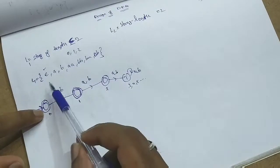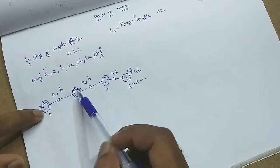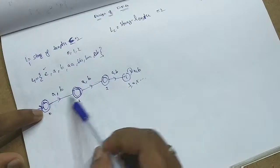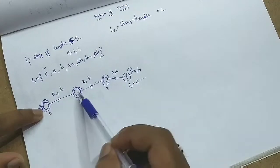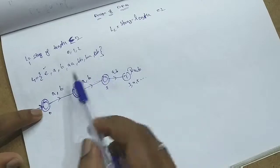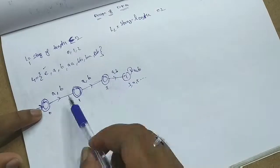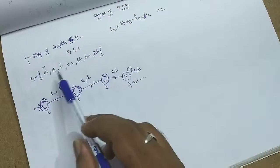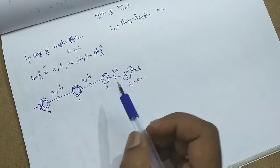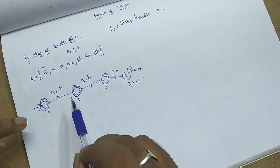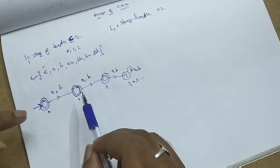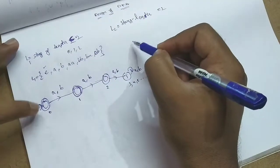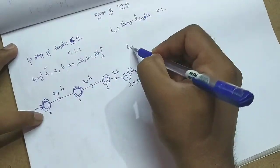Epsilon is accepted directly. A is accepted, B is accepted. AA, AB, BA, BB — all accepted. If the string length is 3, it is not accepted. You can check whether it is accepting or not. The language condition is: length of the string less than or equal to 2.